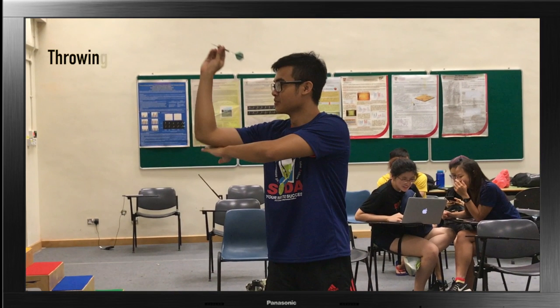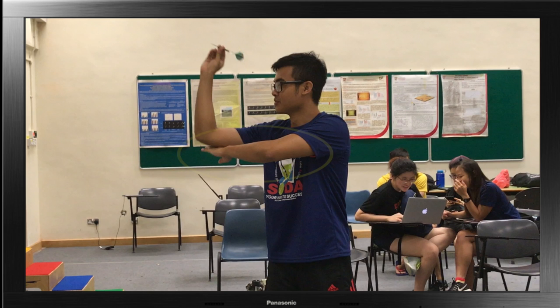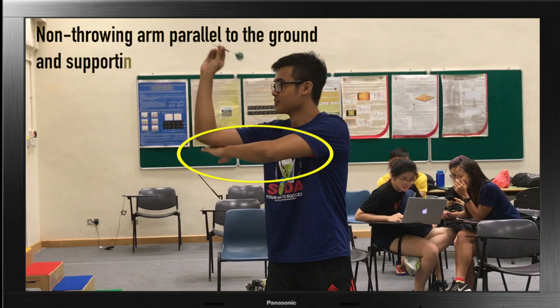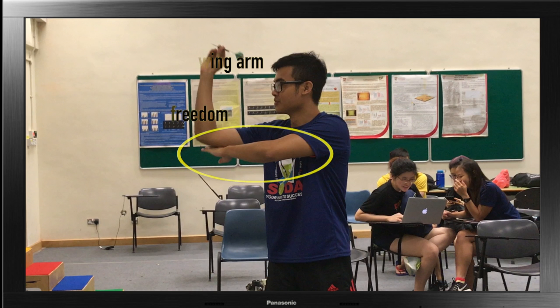Number two, specific actions. For the arms: the throwing arm is locked, only allowing the elbow joint to move freely. Upon release of the dart, a flick of the wrist is done to propel the dart forward. Bonus tip: place the non-throwing arm parallel to the ground, supporting the elbow of the throwing arm. This will provide stability and also reduce the degree of freedom.